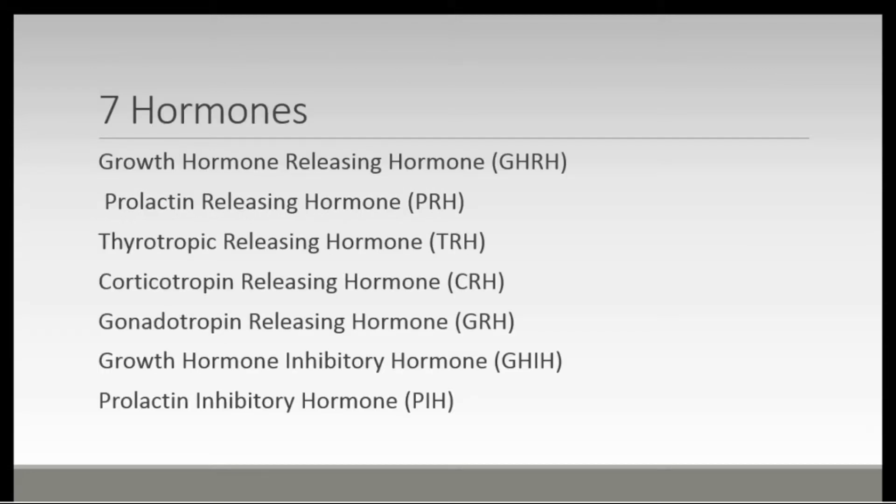These seven hormones include: growth hormone releasing hormone, prolactin releasing hormone, thyrotropic releasing hormone, corticotropin releasing hormone, gonadotropin releasing hormone, growth hormone inhibitory hormone, and prolactin inhibitory hormone — that is five stimulating hormones and two inhibitory hormones.